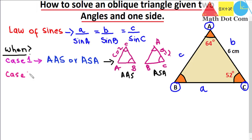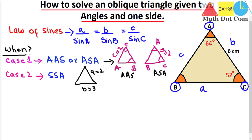Case number two in which you can use the law of sines is side-side-angle (SSA). This means you are given two side lengths of a triangle and an angle that is not between the two sides. For example, if side a equals two centimeters, side b equals three centimeters, and the angle is 30 degrees — and that angle is not between the two sides — this is a non-included angle, and in such a case you use the law of sines.